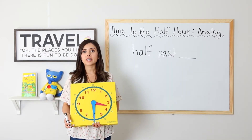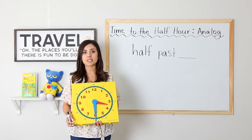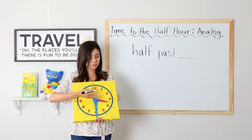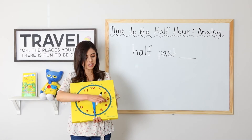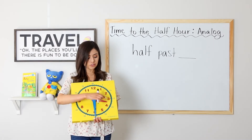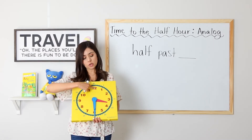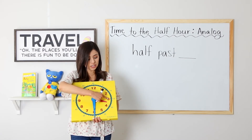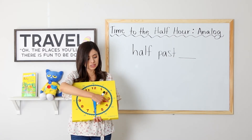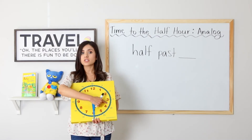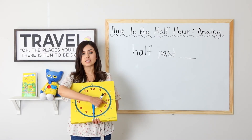Let's go ahead and take a look at a few examples where we see what time it is. Here, let's start with our hour hand. It is pointing right between the three and the four. It has not touched the four yet because it starts at twelve and comes down. It's at the three and, as it's coming down, it's still on three.